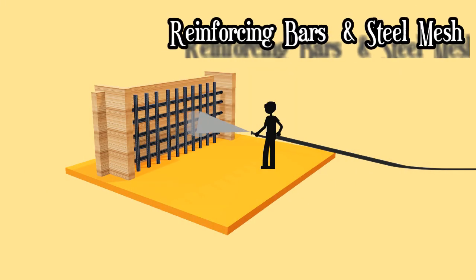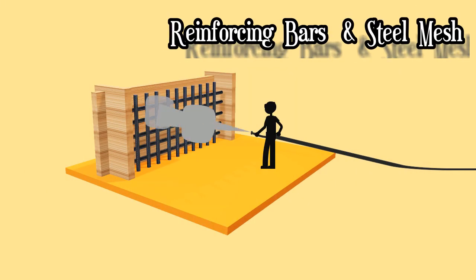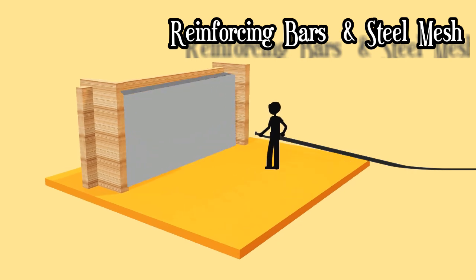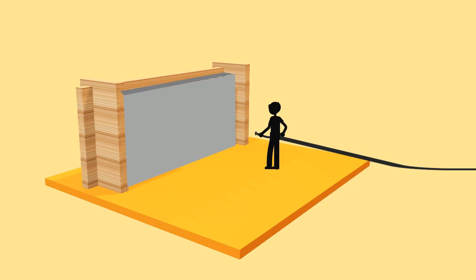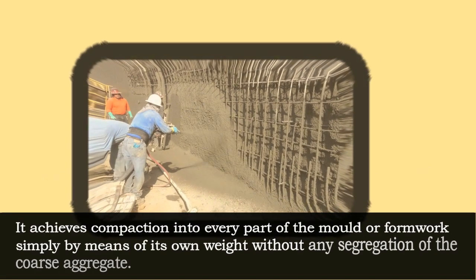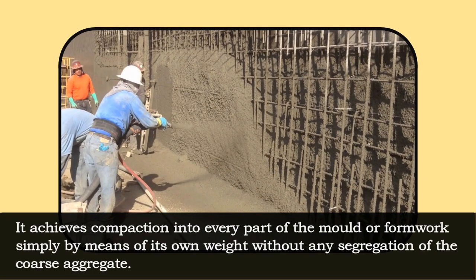For structural uses, shotcrete is usually applied over a framework of reinforcing bars and steel mesh. It achieves compaction into every part of the mold or formwork simply by means of its own weight, without any segregation of the coarse aggregate.